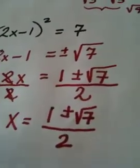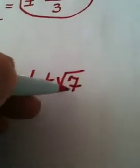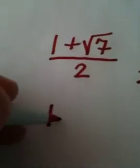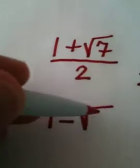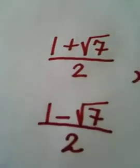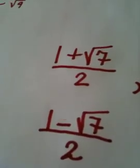And if I were to write that as separate answers, I would write 1 plus the square root of 7 all over 2, comma, 1 minus the square root of 7 all over 2, which is what I think Course Compass is going to require you to do.